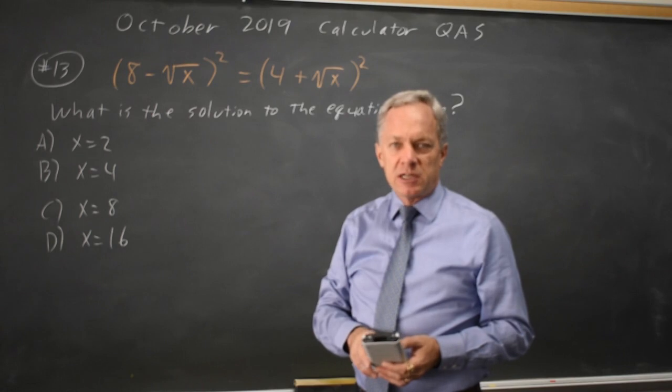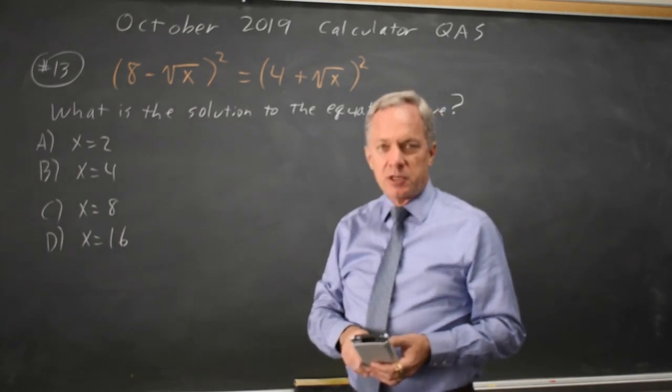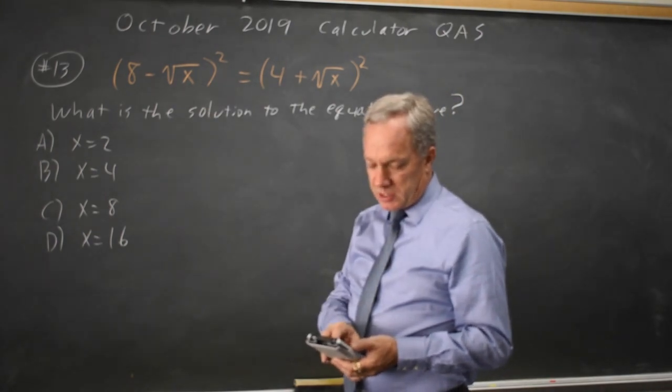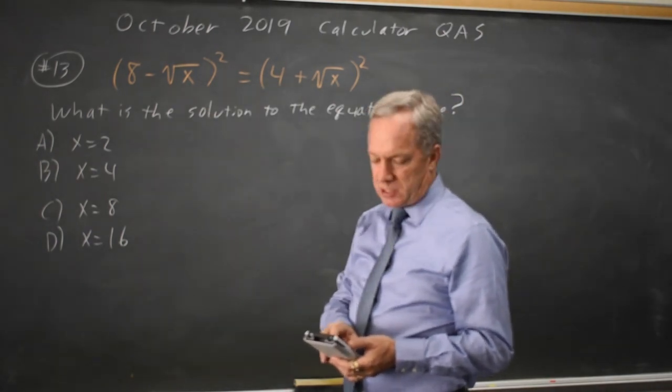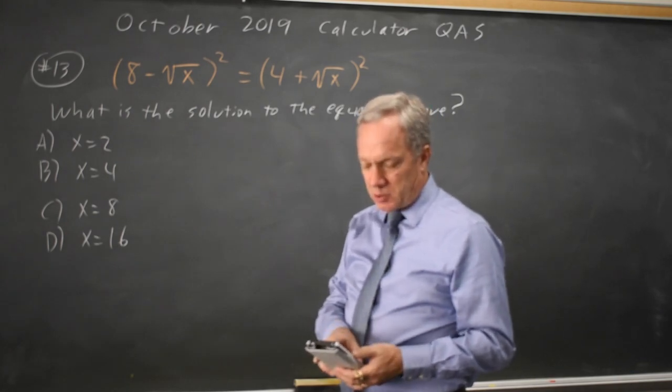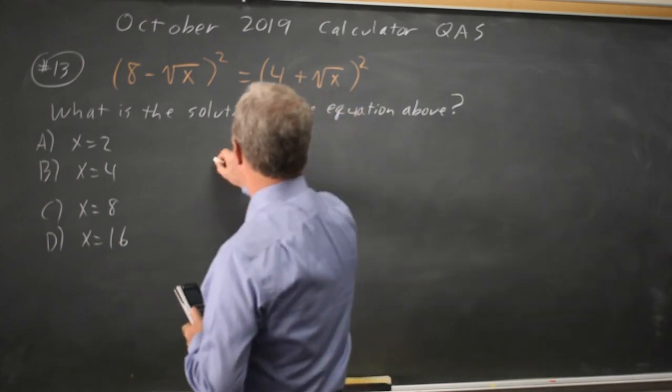I can't actually see it under the standard window, but 8 squared would be 64, so I'm going to make my y max 100. And my largest answer choice is 16, so I'm going to make my x max 20, and hit graph, and now it looks like this.